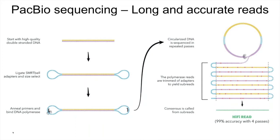When you are doing the sequencing, the polymerase starts to move around this molecule, creating several passes. Each pass is called a sub-read. Both strands get sequenced many times. Each pass of the molecule has quite a lot of errors, but you can then combine all of these sub-reads into a high quality read for this specific molecule. This is called a HiFi read. With only four passes we can reach 99% accuracy. So from single molecules, you can get very high quality reads of several kilobases in length.